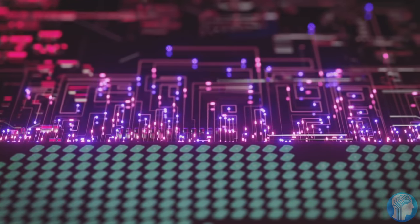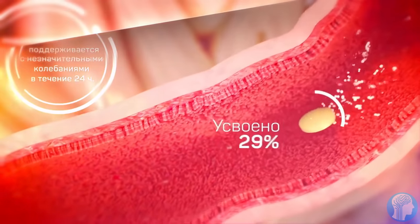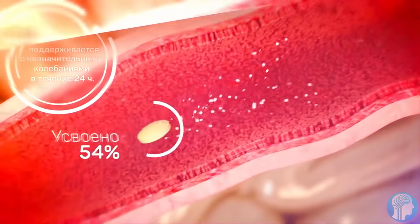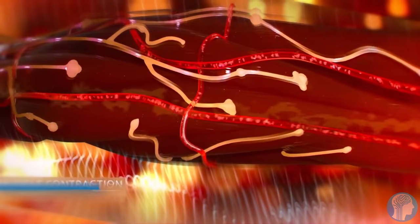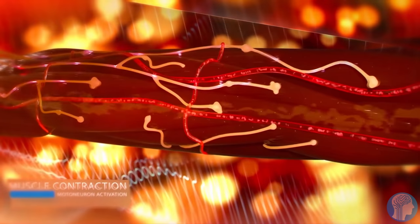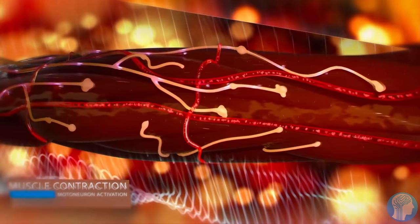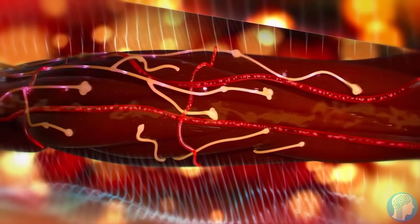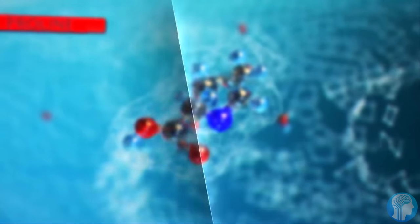During neurosurgery, invasive brain-computer interfaces are inserted directly into the gray matter of the brain. Invasive devices give the best quality signals of any brain-computer interface device since they are located in the gray matter, but they are prone to scar tissue buildup, which causes the signal to become weaker or possibly non-existent as the body reacts to a foreign object in the brain.